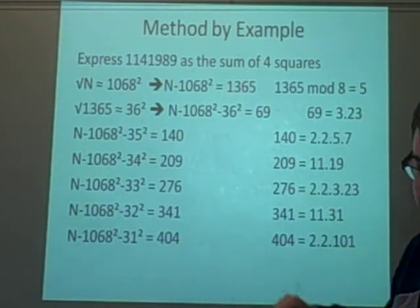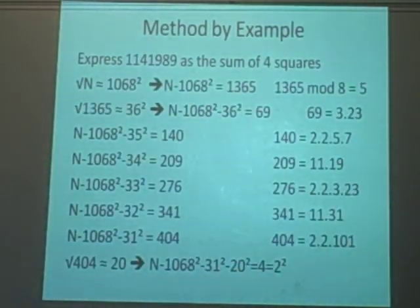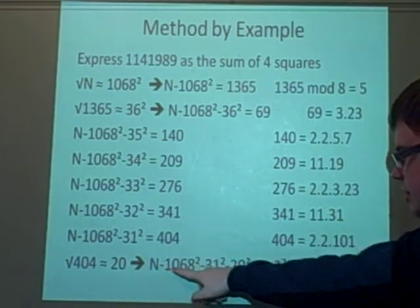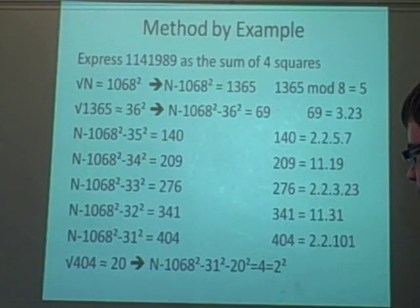So now we want to check this one. So again, we should start off by square rooting it. Some of you might be able to see what it is already. And we get about 20². So we do this minus the 20², which is 4, which we know is 2². Or you could just square root it again, and give you 2².